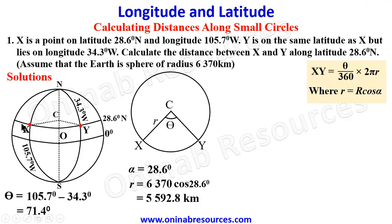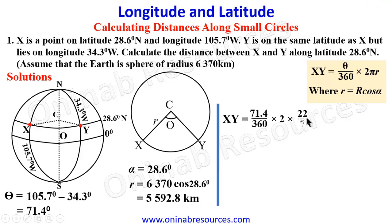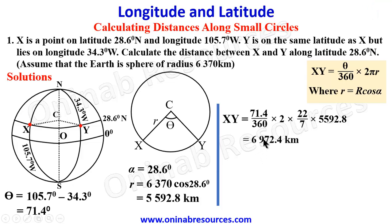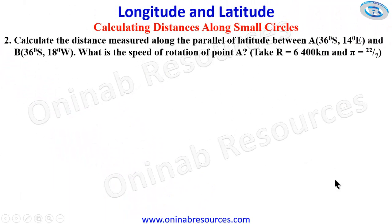The small radius is R cos(alpha) = 6370 × cos(28.6°). From the calculator we get 5592.8 kilometers. We then calculate the distance XY: (71.4 / 360) × 2 × (22/7) × 5592.8. Inputting this into the calculator gives 6972.4 kilometers, which to three significant figures is 6970 kilometers. That's the end of the solution to problem one.